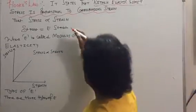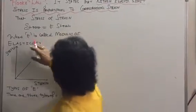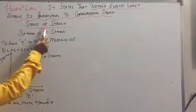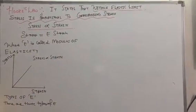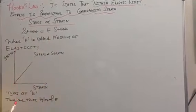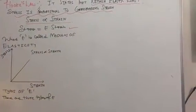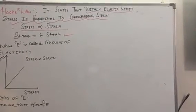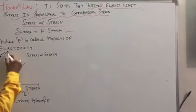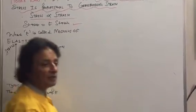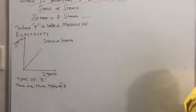In other words, stress is proportional to strain. We remove the proportionality sign and introduce a constant E. So stress equals E times strain, where E is called modulus of elasticity. If we plot a graph, stress is proportional to strain.